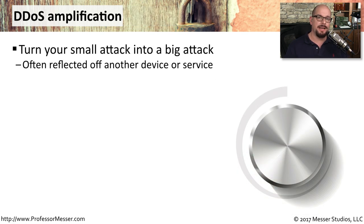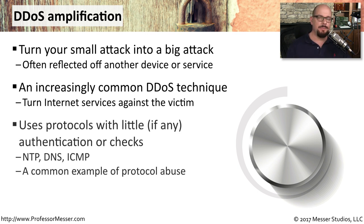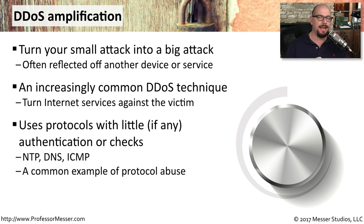Another technique DDoS attackers like to use is amplification. They can send a very small attack, but by the time it reaches you, it has become very large. They're usually reflecting this attack off a third-party service to increase the total size of the attack. These amplification attacks work because some older protocols were not created with any type of security in mind — protocols like Network Time Protocol (NTP), DNS, and ICMP are protocols that people have been able to abuse and amplify attacks against a third party.